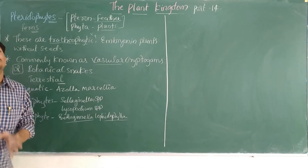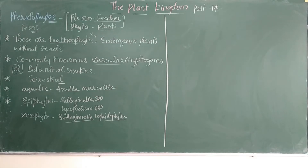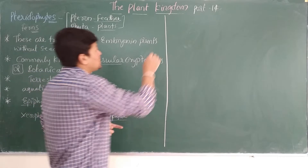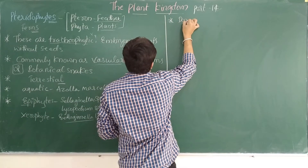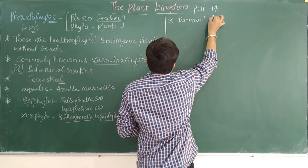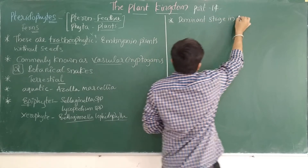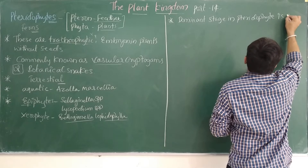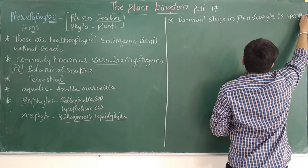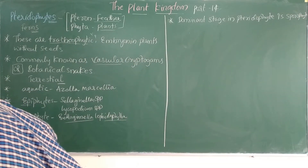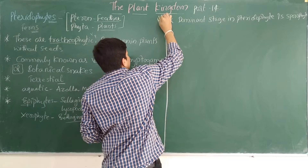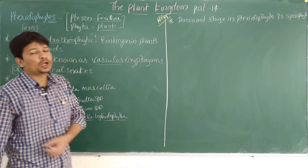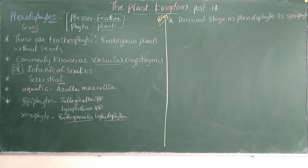As we all know, the dominant phase in case of bryophytes is the gametophyte. But in case of pteridophytes, there is a difference — the dominant stage is the sporophyte. This is very important for competitive examinations like NEET. Remember: the dominant phase in pteridophytes is the sporophyte.